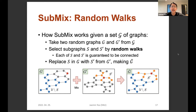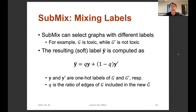This is how SubMix actually works for a set of graphs. We take two random graphs G and G' from the given set of graphs and select subgraphs S and S' using a random walk diffuser, guaranteeing that each of S and S' is connected. Then, based on S and S', we replace S in G with S' taken from G', making the new graph G-bar. SubMix can select graphs with different labels. For example, G can be a toxic graph while G' is not toxic. So the resulting label Y-bar is computed as the weighted sum of Y and Y', the original labels of G and G' respectively, where Q is the ratio of edges of G included in the new graph G-bar.